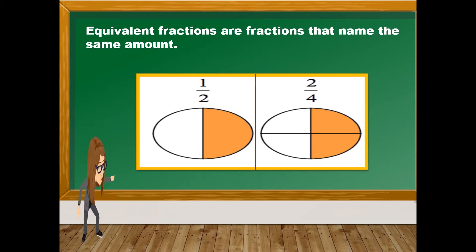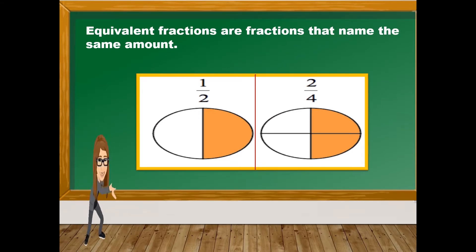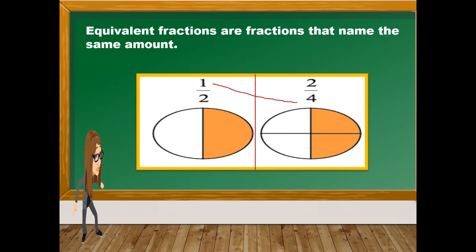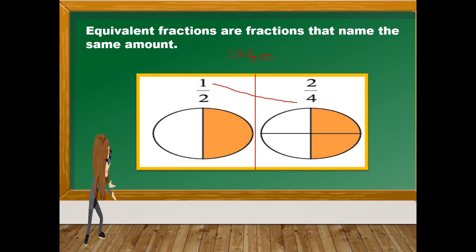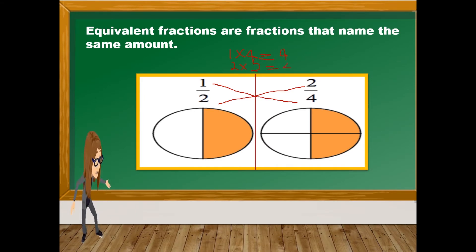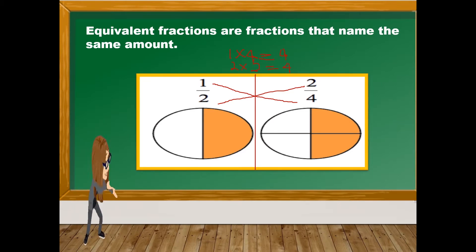There are also other techniques to know if fractions are the same or not. One means is cross multiplication — we multiply the numerator by the denominator. One times four is four, and two times two is also four. Therefore, we can say that these fractions are equivalent or equal.